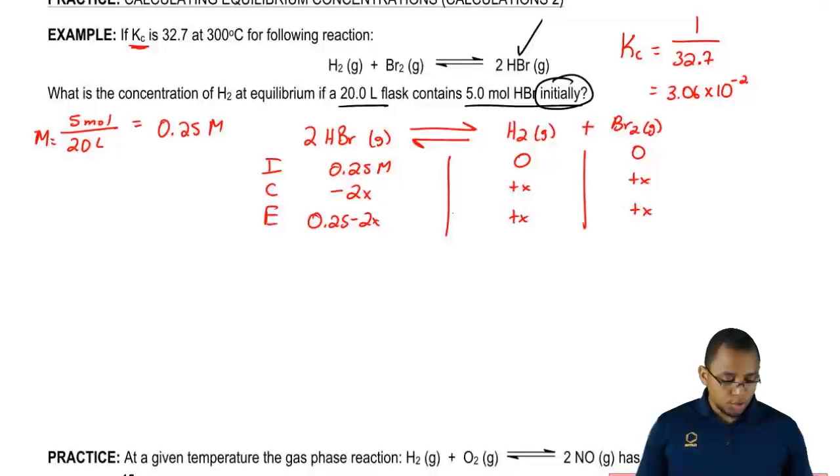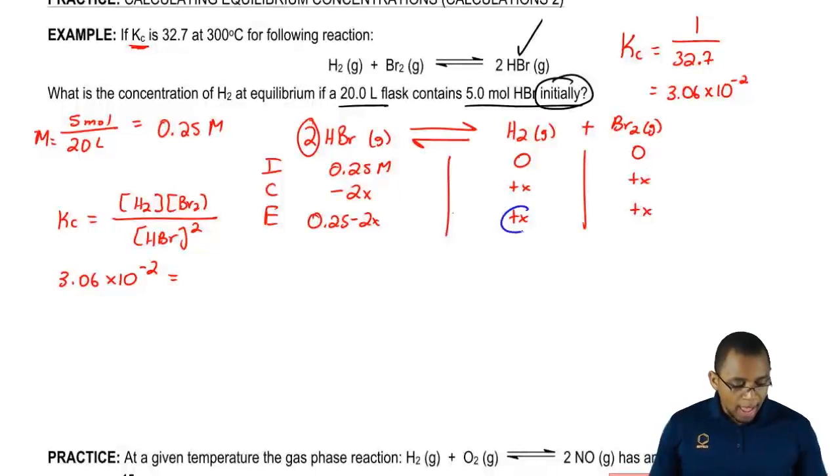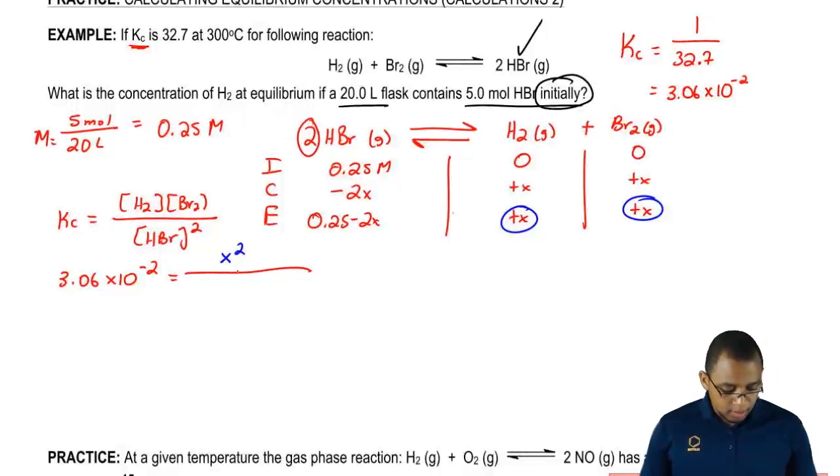Now what we're going to do is we're going to solve for our x variable. So, now we're going to say that KC equals products over reactants, so it equals H2 times Br2 over HBr squared. And it's squared because remember the 2 here. Now we're just going to plug in the numbers we know. We know what KC is. It's 3.06 times 10 to the negative 2. That's going to equal, at equilibrium, H2 and Br2 are both x. So x times x is going to give me x squared divided by 0.25 minus 2x squared.